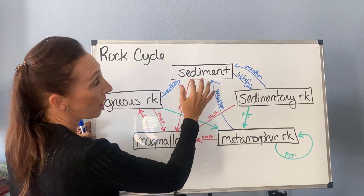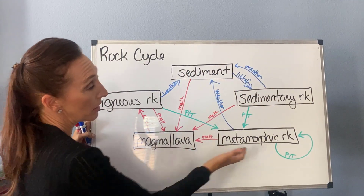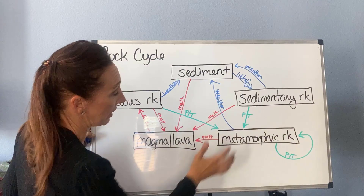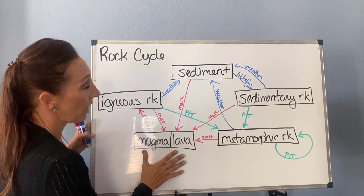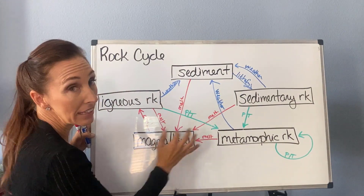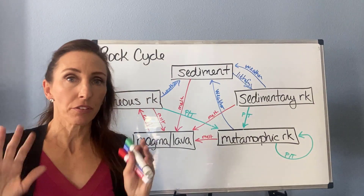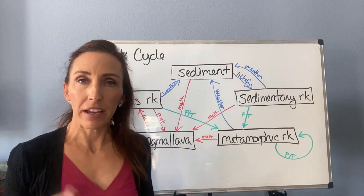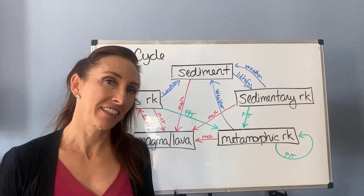Sedimentary rock is generated by lithifying sediment. Metamorphic rock is made by adding pressure and temperature to anything. And magma or lava is made by melting anything. You can think about either the incoming arrows or the outgoing arrows, but either way of logically thinking it through gets you to the same cycle.